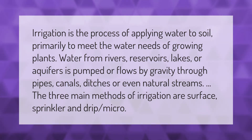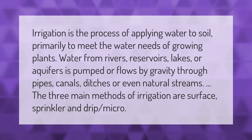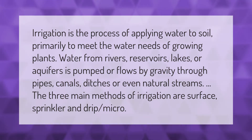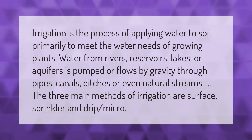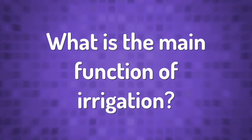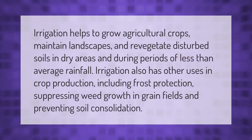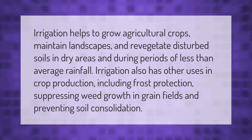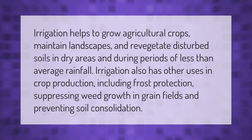The three main methods of irrigation are surface, sprinkler, and drip/micro. Irrigation helps to grow agricultural crops, maintain landscapes, and revegetate disturbed soils in dry areas and during periods of less than average rainfall.